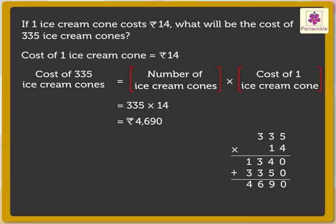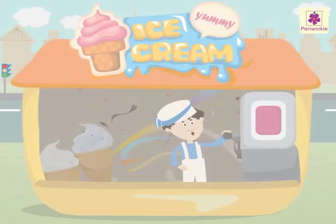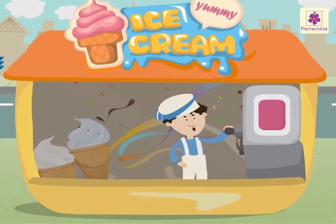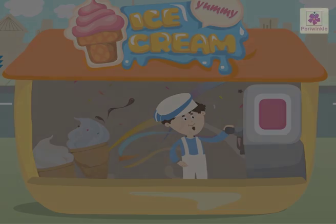Therefore, 335 ice cream cones into 14 rupees is equal to 4,690 rupees. It was fun learning one too many at this ice cream shop. Thank you.